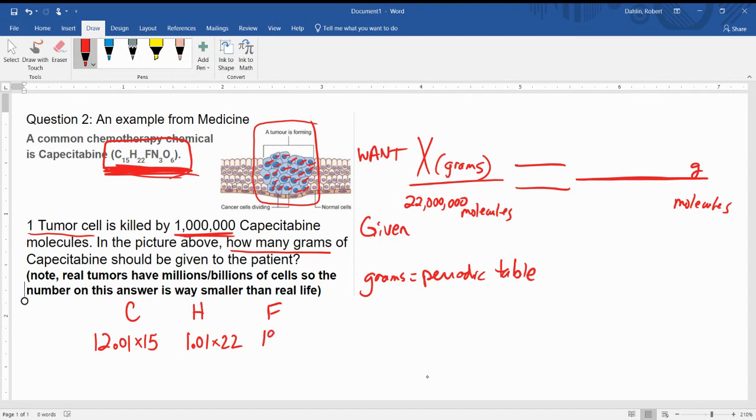Nitrogen on the periodic table, and our equation says we have three of those, that subscript 3, so I'm going to multiply this by 3. Then we have O for oxygen. Oxygen is 16.00, and our equation says we have six of those.